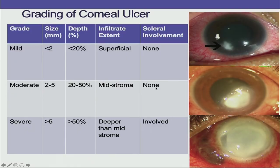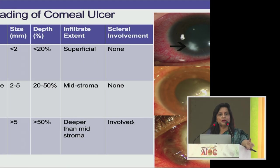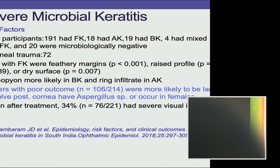It is important to grade the ulcer as mild, moderate, or severe. If it is less than 2 mm in size with less than 20% depth and superficial, it is mild. Two to 5 mm with 20–50% depth in the mid stroma is moderate. More than 5 mm with more than 50% depth deeper than stroma is severe. This grading dictates your treatment modality, whether it is bacterial or fungal keratitis.